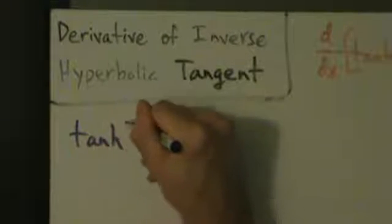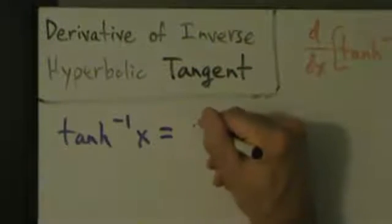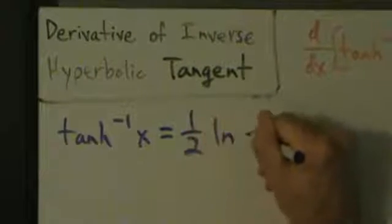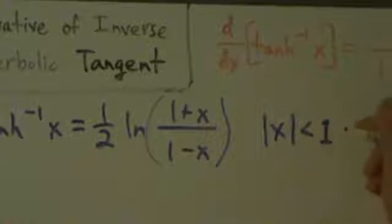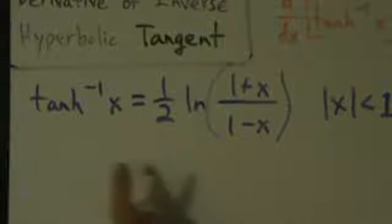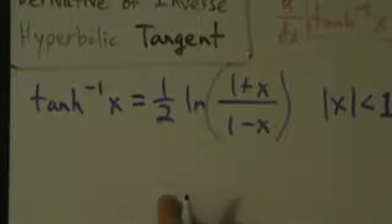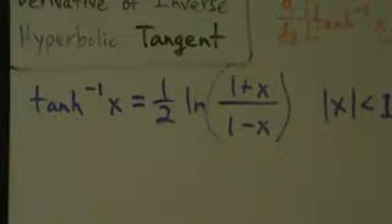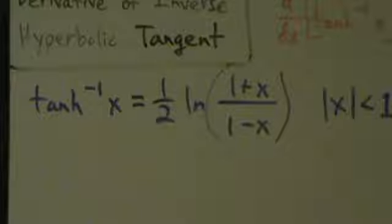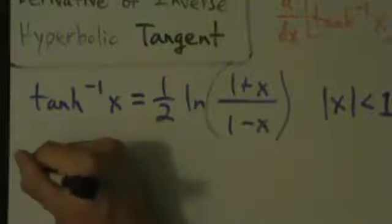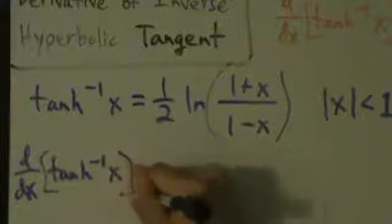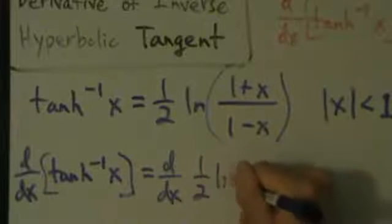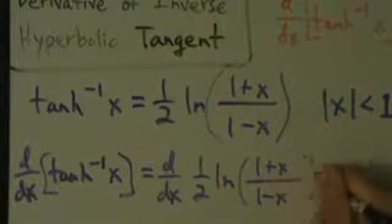First we want to write down this definition: the inverse hyperbolic tangent of x equals one-half times the natural log of (1 plus x) over (1 minus x), with the restriction that the absolute value of x is less than 1. This is just a definition of the inverse hyperbolic tangent — you can derive it similarly to the inverse hyperbolic sine or cosine in terms of natural logs, but that's a topic for a different video. So let's jump right into this derivative using this definition.